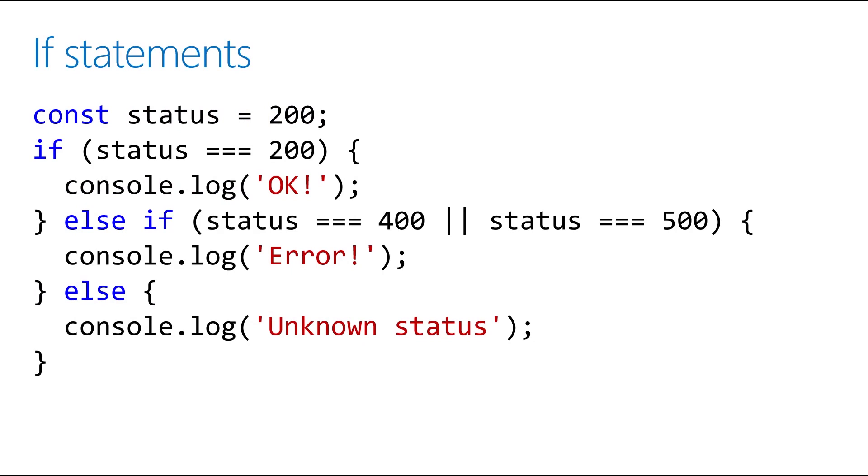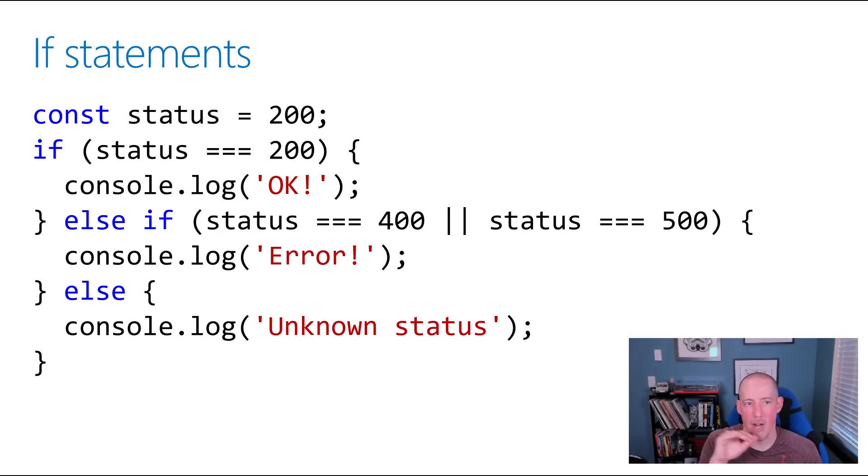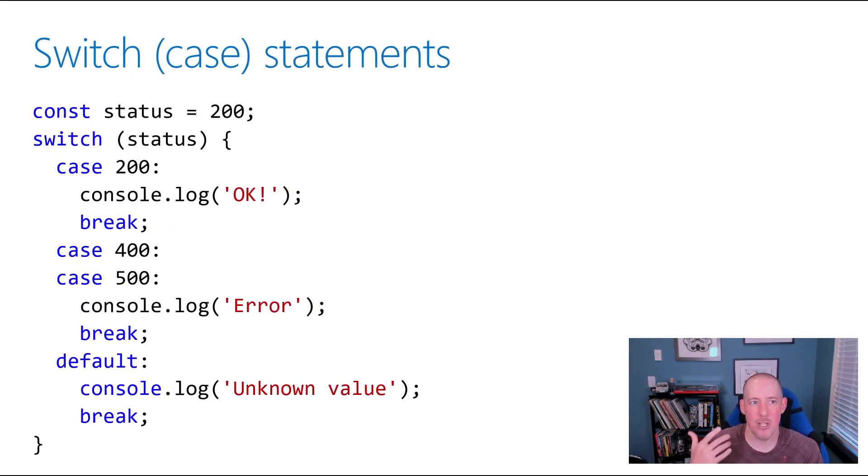Now, if we take a look at how we can combine these, you're going to notice on our else if that I've got my OR. So if the status is 400 or 500, then we're going to print out error. Now, you might be looking at that and you might be going, wow, there could be a lot of different values here that I want to test for and do different things on, and I can wind up with a really long statement here. Well, this is where switch or as some people like to call it, a case statement or maybe even just switch case comes into play.